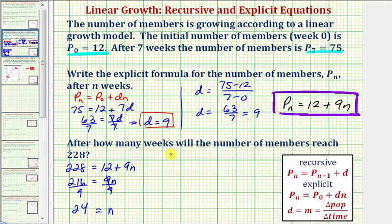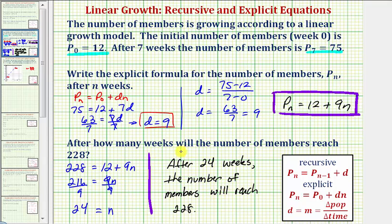So as a sentence, we would say, after 24 weeks, the number of members will reach 228. I hope you found this helpful.